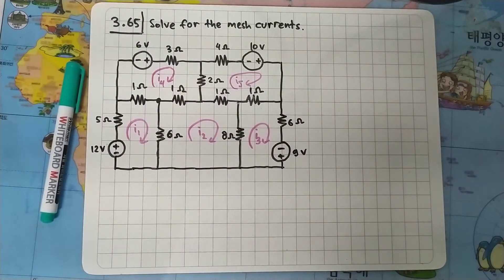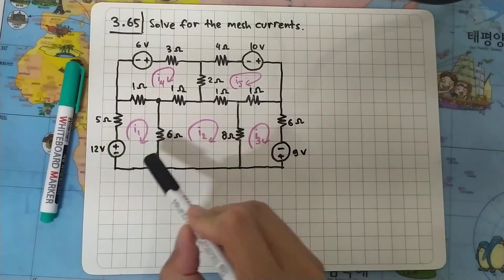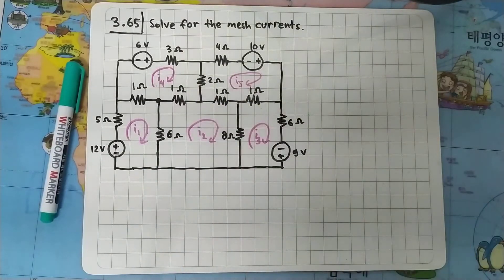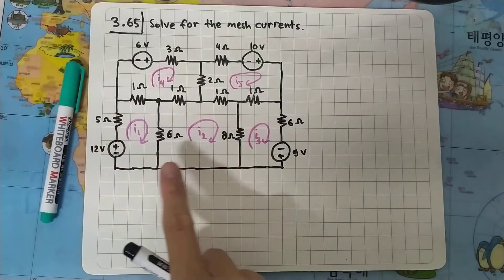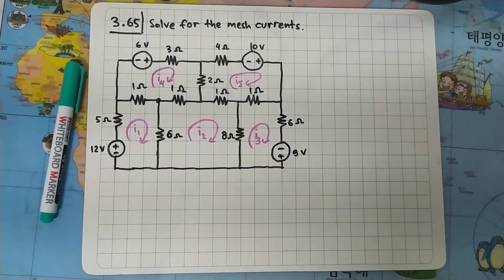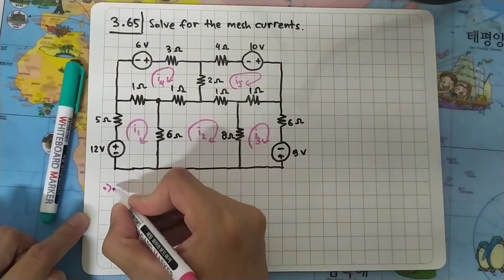We are going to solve problem 3.65 from Sadiku's book. The question asks us to solve for the mesh currents. We are asked to find I1, I2, I3, I4, and I5, so there will be five equations from the loops. Let's start at loop number one and do KVL.